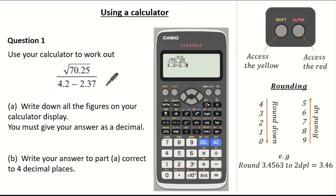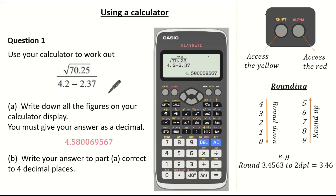Scrolling out by pressing to the right of the cursor and then down, over 4.2 subtract our 2.37. What is important to remember is the calculation on the calculator screen looks identical to the calculation in the exam question. Here our answer is 4.580069567 and we have written all the digits which are on our calculator display.